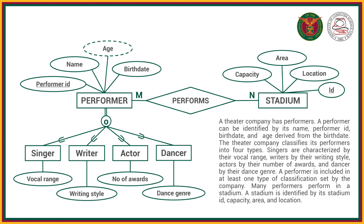To reiterate: in inheritance, all subclasses will inherit the attributes and relationships of their superclass. So for this example, singer, writer, actor, and dancer entities will have performer ID, name, age, and birthdate as attributes, and will also inherit the relationship of performer to the stadium.